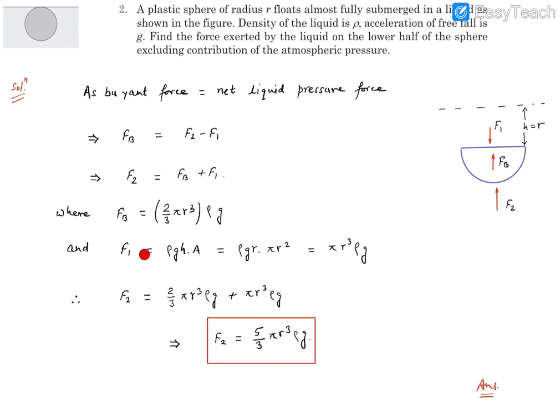How much is F1? F1 is the pressure force on the flat surface, so it's going to be the pressure at that location times area. The pressure at all locations on this flat surface is going to be rho g h if we exclude the atmospheric pressure.